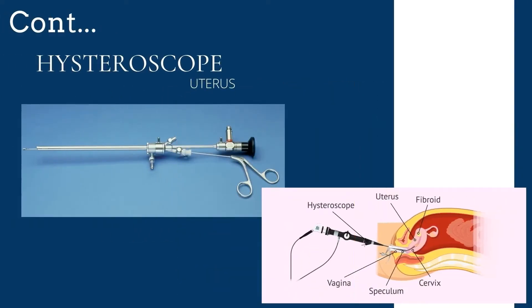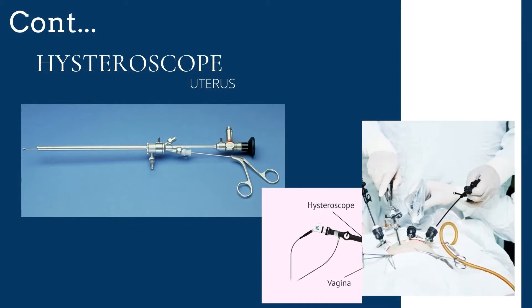The hysteroscope — the procedure is known as hysteroscopy. It is specially designed for the area of the uterus. It is inserted through the vagina.